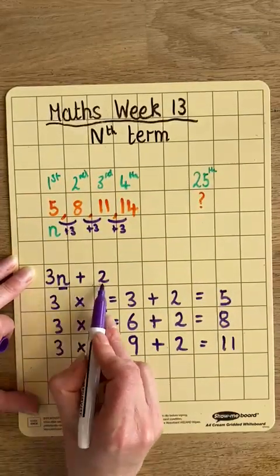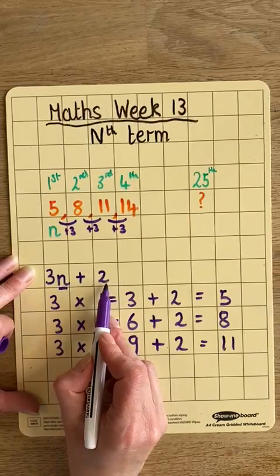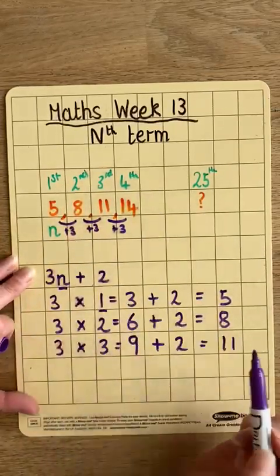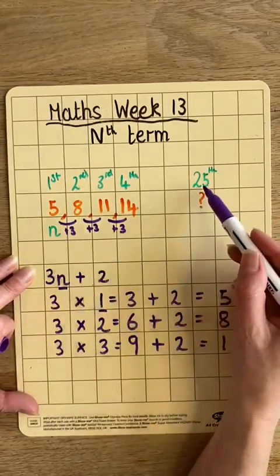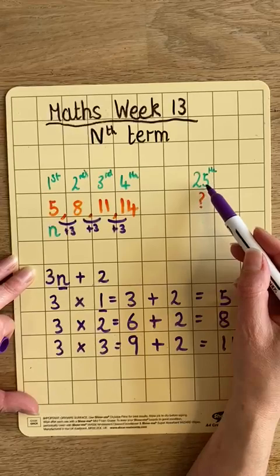So this formula that I've devised here for finding any term in the sequence is working. So this time we're going to substitute n for 25 to find the 25th term.